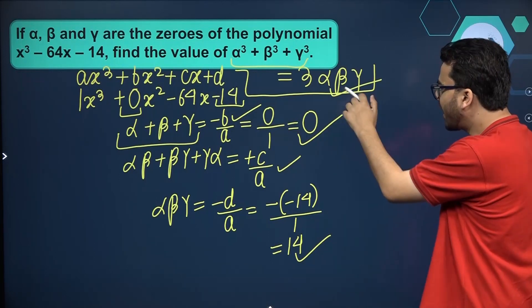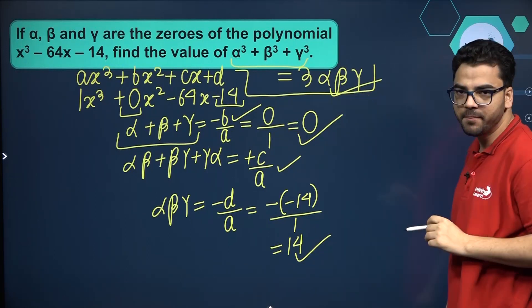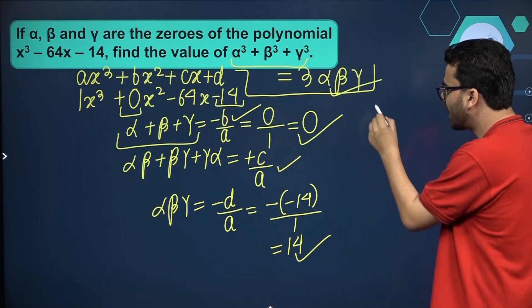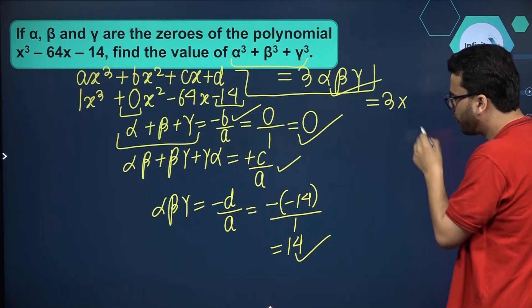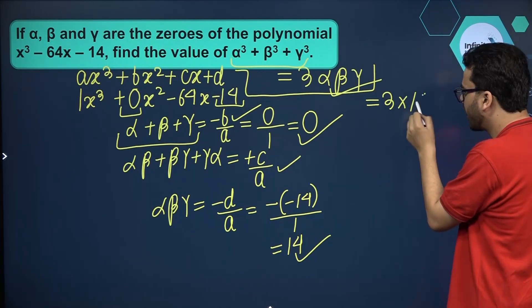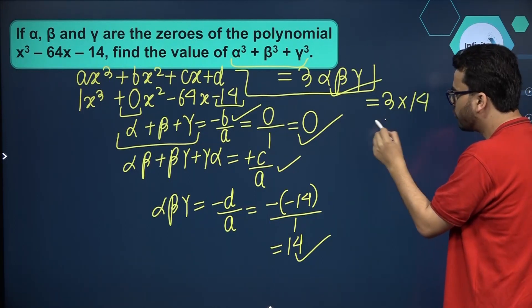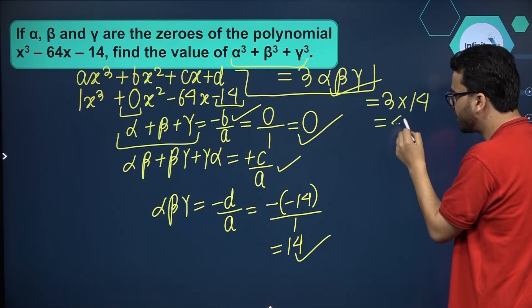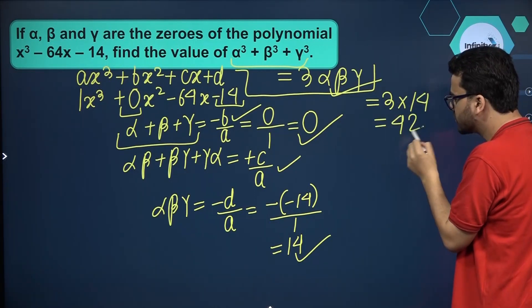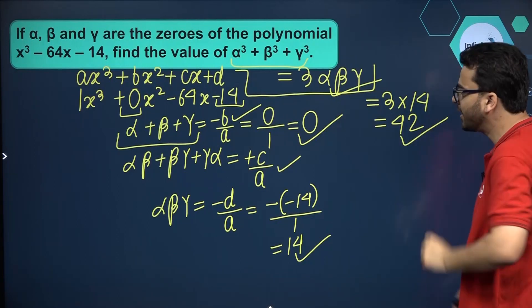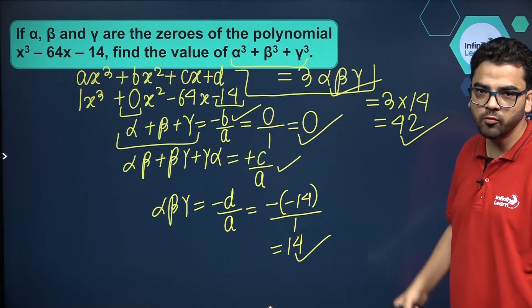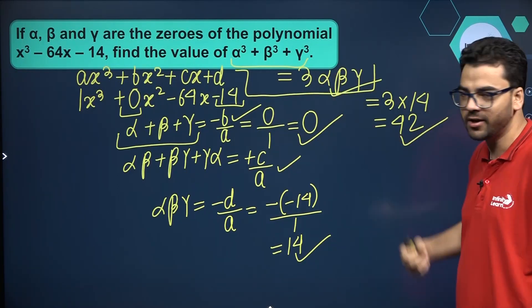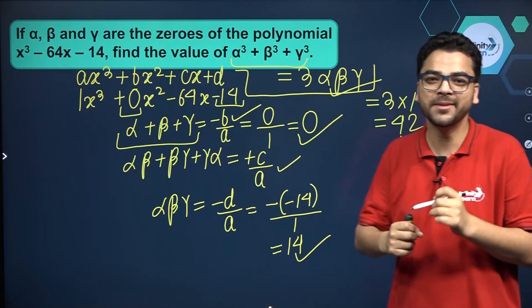So what is the value of 3·alpha·beta·gamma? That is equal to 3 times 14, which equals 42. Therefore the value of alpha cubed plus beta cubed plus gamma cubed is equal to 42.